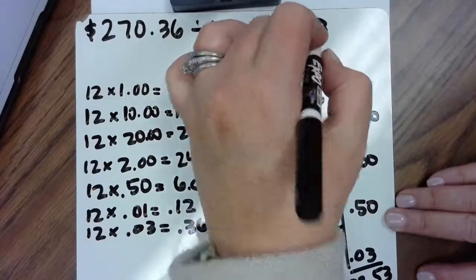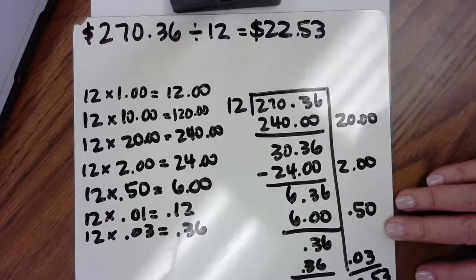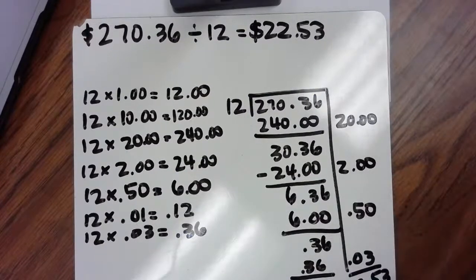$22.53. Each jersey costs Coach Wall $22.53. I hope you find this helpful as you seek to use partial quotients to divide decimals. Thanks.